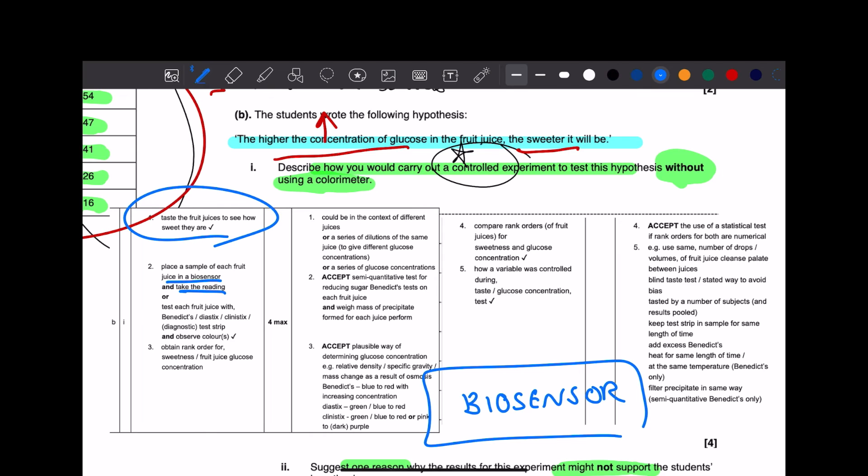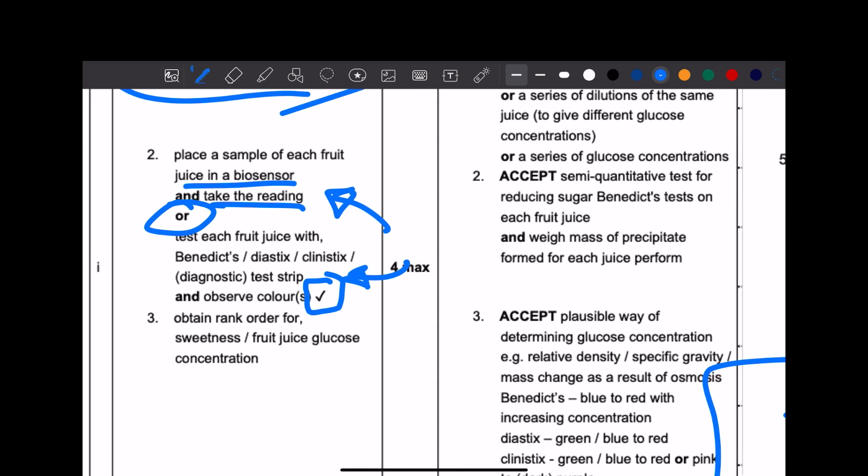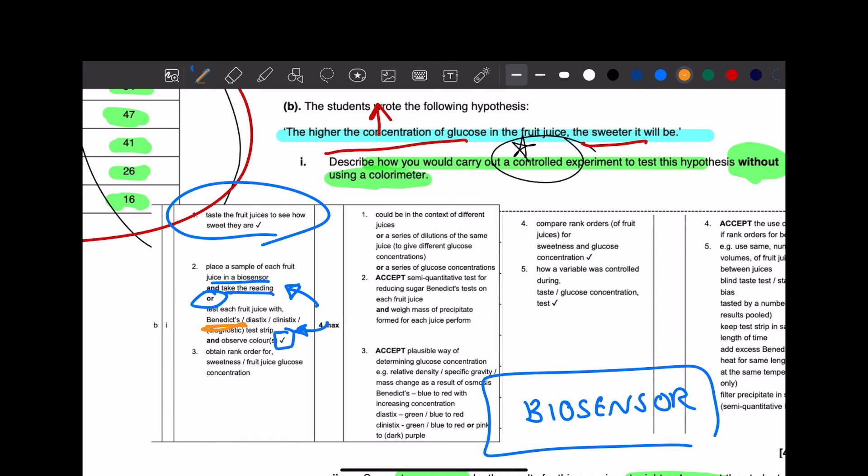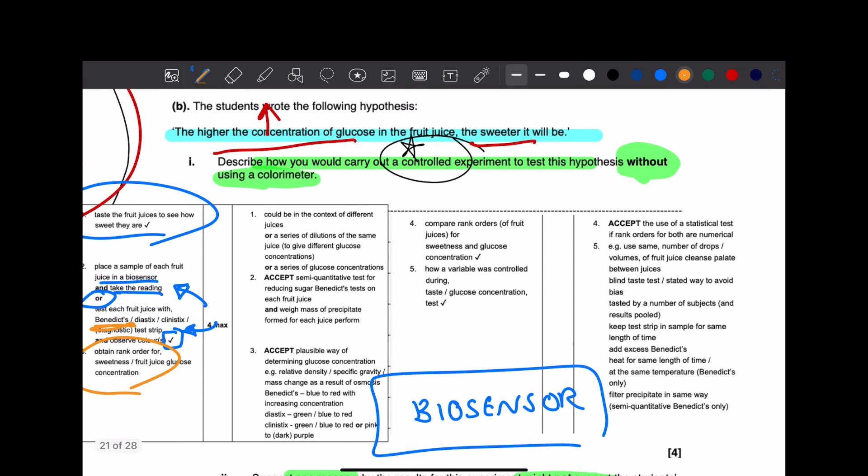You can place a sample of each fruit juice in a biosensor and then you need to take the reading. Or, if it says or, it means that for that one marking point you can either get it for saying this or this, but you don't get two for both of them. It's just one or the other. But the most easiest one, to be fair, is just saying Benedict's solution or Benedict's test strip and observe the colours. Because we're trying to test this hypothesis, we need to rank them by sweetness and then see the concentrations for them. Remember to rank them and compare the ranks between concentration and sweetness. Because it's a controlled experiment, you get a mark for talking about a control variable. That's a very easy mark you can get.